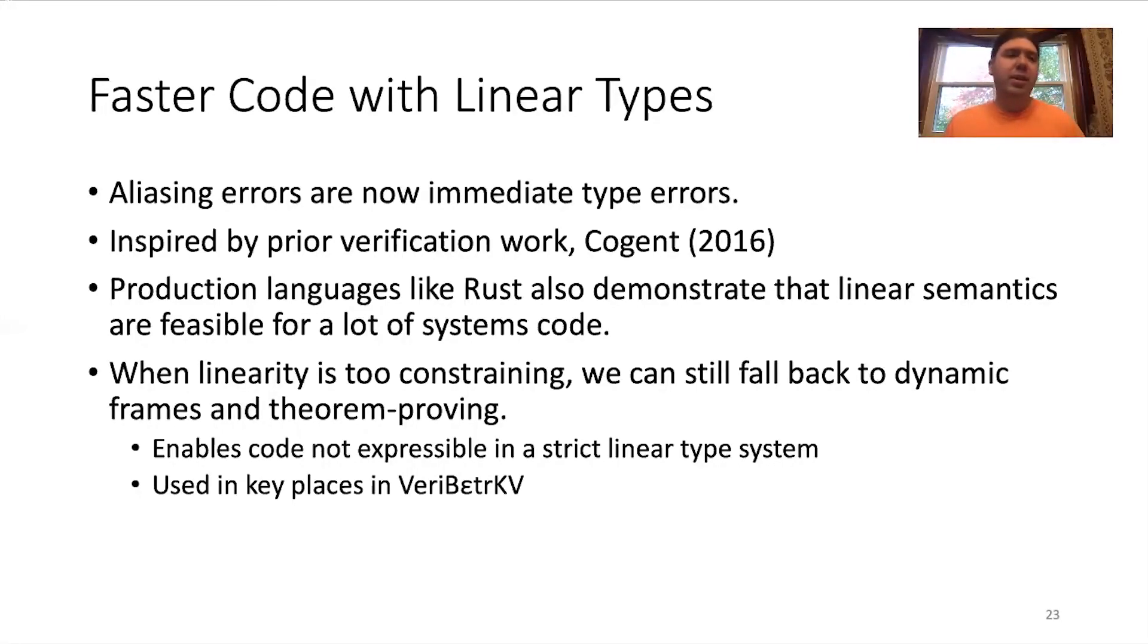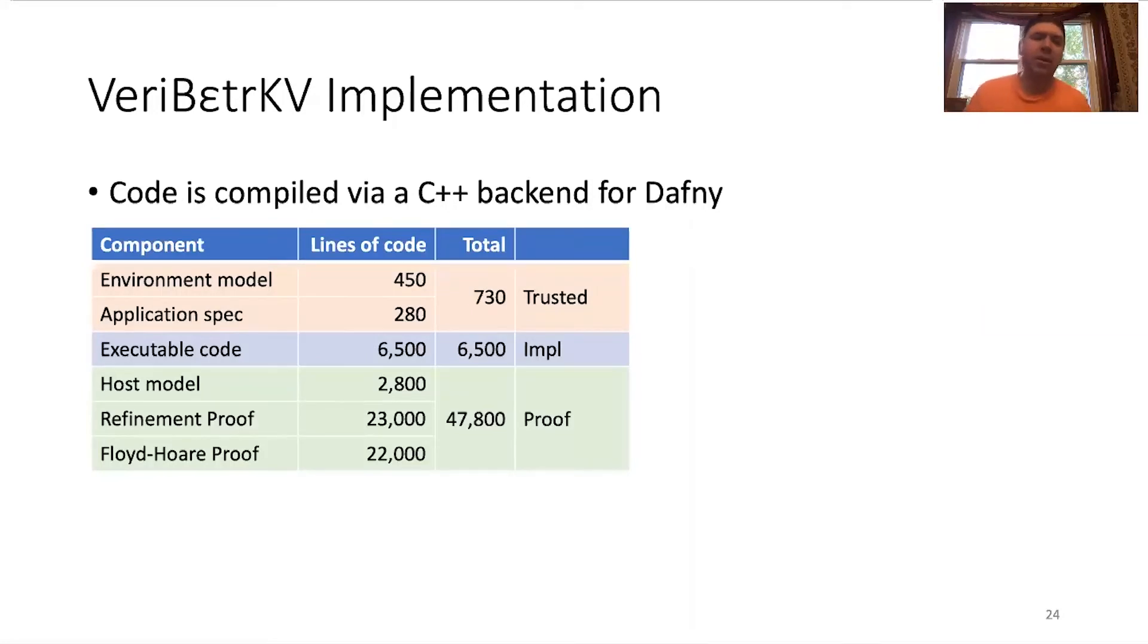So, this addition to Dafny is inspired by some prior verification work, like Cogent from 2016, also from production languages like Rust, which show that these linear semantics are feasible for a lot of systems code. However, even when it's not feasible, when linearity is too constraining, we can still fall back to dynamic frames and theorem proving. So, we can write code that will not be expressible in a strict linear type system. And we use this in some key places in our code base.